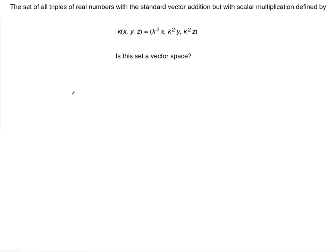The set of all triples of real numbers with the standard vector addition but with scalar multiplication defined by K times XYZ is equal to K squared X, K squared Y, K squared Z. Is this set a vector space?